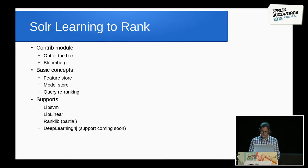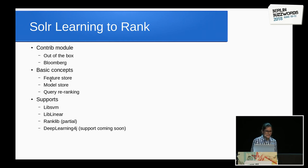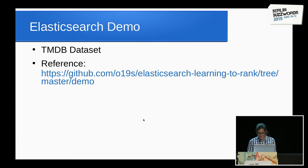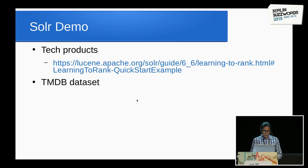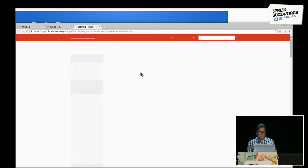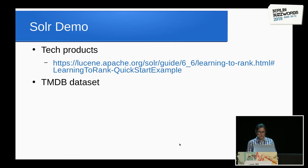We now move on to learning to rank for Solr. The LTR plugin for Solr comes out of the box as a contrib module, which was initially provided by Bloomberg. The basic concepts remain the same: feature store, model store, and query re-ranking. It supports libraries like LibSVM, LibLinear, and RankLibPartial — which supports only a few algorithms such as LambdaMART — and Deep Learning 4J support is coming. For an apple-to-apple comparison, I've used the same TMDB dataset as for Elasticsearch.